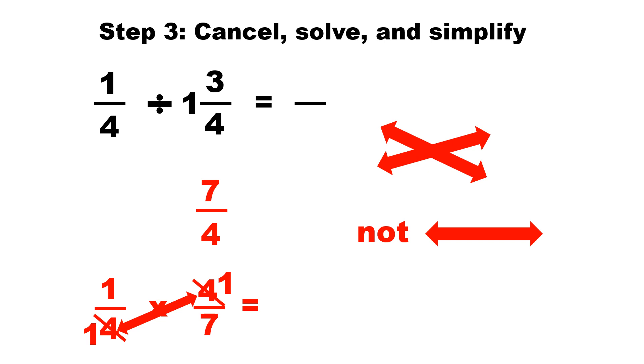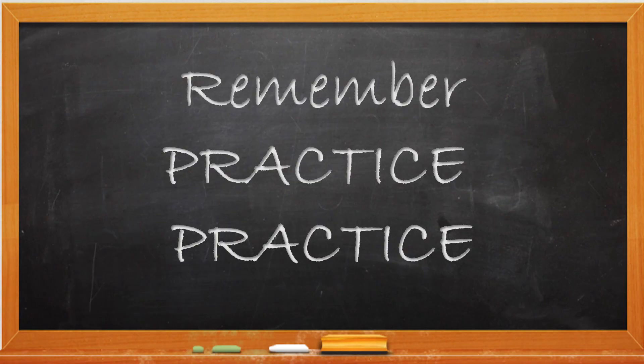So what we're going to do is multiply across. Top numbers first: one times one will equal one. Bottom numbers, the denominators: one times seven will equal seven. The answer is one-seventh.